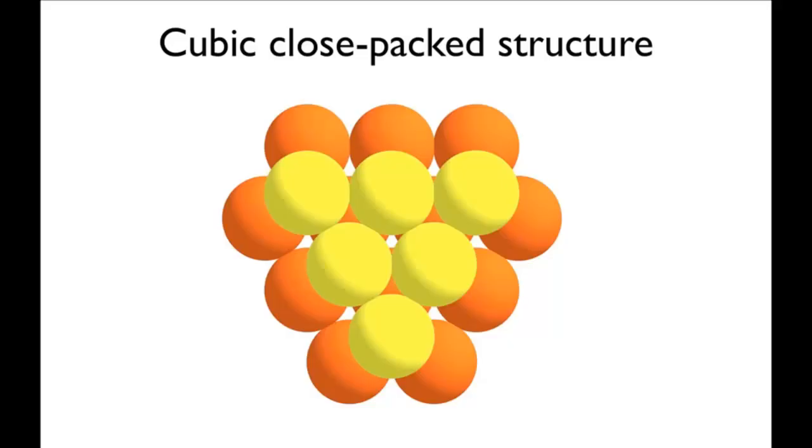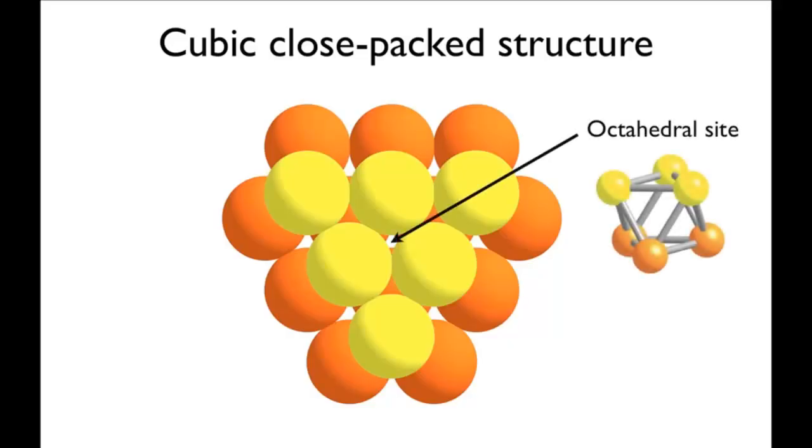Looking at the two closed-packed layers, the octahedral sites lie between a triangle of atoms in the row above and another triangle of atoms in the row below. The tetrahedral sites lie between a triangle of atoms in one row and a single atom in the other.